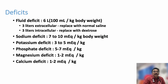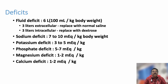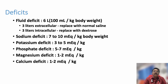One of the major problems in DKA is deficits. Fluid deficit is most important, followed by sodium deficit, potassium deficit, phosphate deficit, magnesium deficit, and calcium deficit. Fluid deficit is approximately 6 liters in a DKA patient — about 3 liters extracellular fluid to be replaced with normal saline, while intracellular fluid replacement can be with dextrose-containing solution (DNS or 5% dextrose).